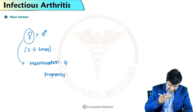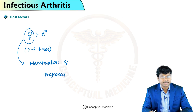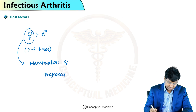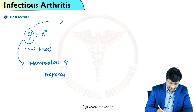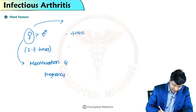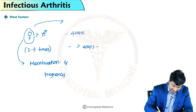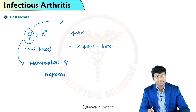Gonococcal arthritis occurs around the age group of 40 years, and beyond 40 years the development of gonococcal arthritis is very rare.